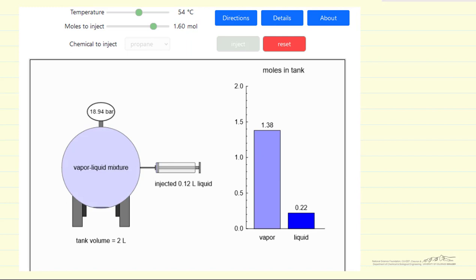This is what the simulation looks like. In this case, at 54 degrees, we injected 1.6 moles of propane and we have both vapor and liquid. The pressure here is the saturation pressure at 54 degrees C. The volume of liquid, 0.22 moles, represents a much smaller volume than the vapor volume. We've actually exaggerated the volume of the liquid in this figure just to make it clear that we have some liquid present.